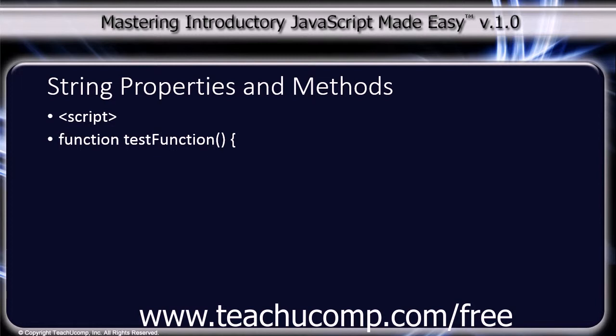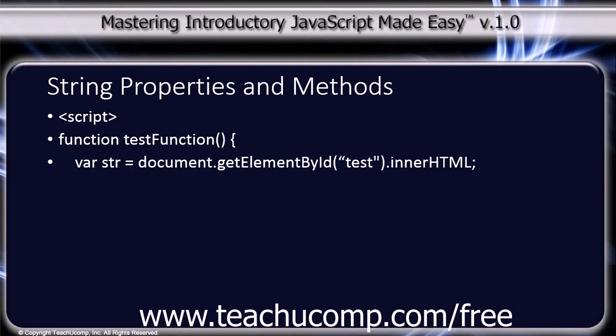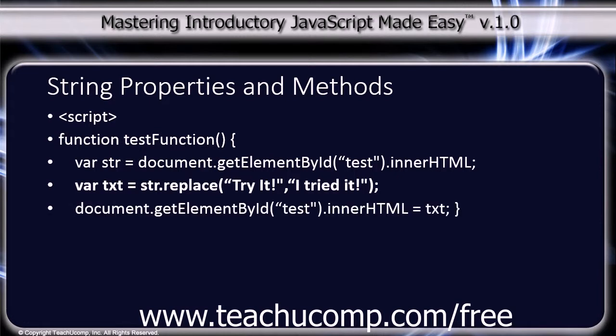Script tag. Function testFunction(), open curly bracket. var str equals document.getElementById('test').innerHTML; var txt equals str.replace('try it!', 'I tried it!'); document.getElementById('test').innerHTML equals txt; close curly bracket. And the close script tag.